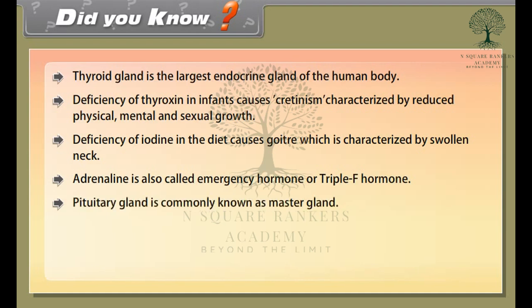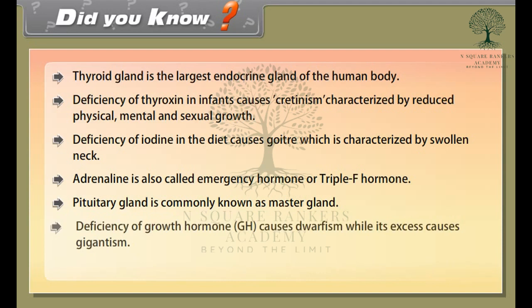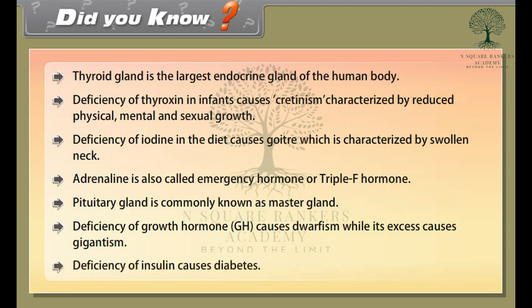The pituitary gland is commonly known as the master gland. Deficiency of growth hormone (GH) causes dwarfism, while its excess causes gigantism. Deficiency of insulin causes diabetes.